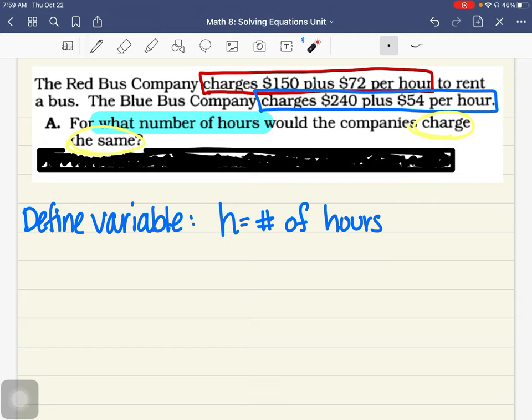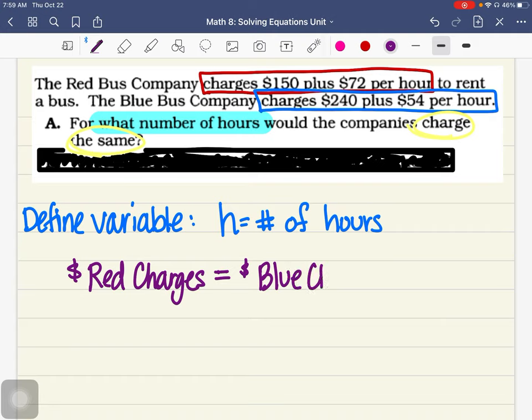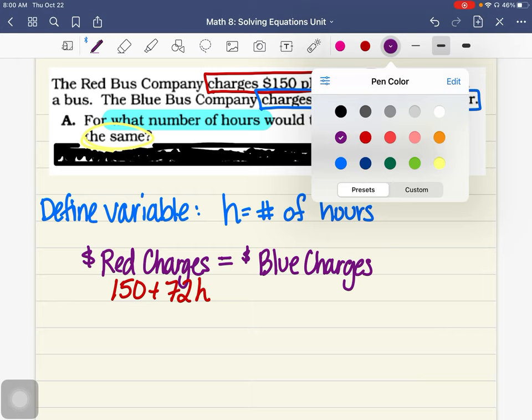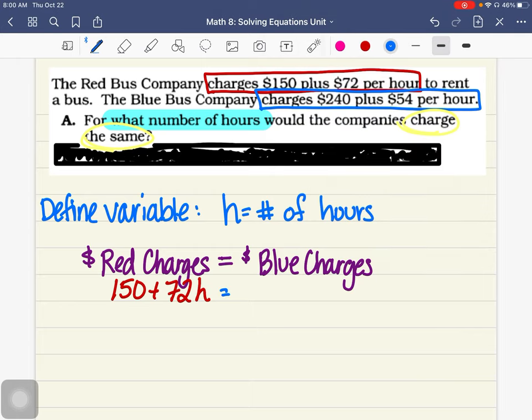And now we're going to set up the equation. I'm going to come back here. When they charge the same, the companies charge the same. So if I put my equal sign in here, they want to know what the red money charges, the money that red charges. They want it to be the same as the money that the blue charges. That's going to be our equation. Let's put in the numbers. So red is $150 plus $72 for every hour. So I'm going to multiply by H. And then blue charges $240 plus $54 every hour.